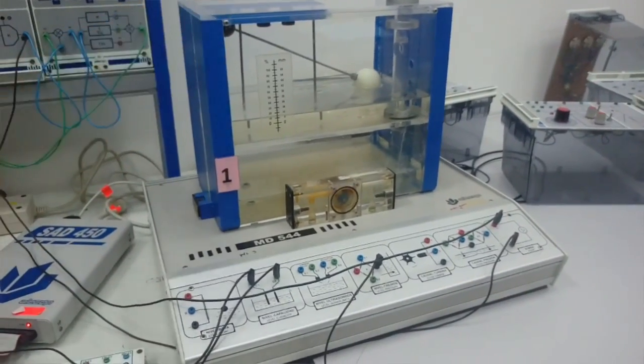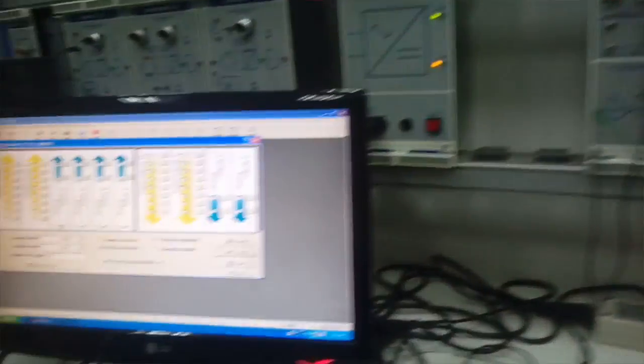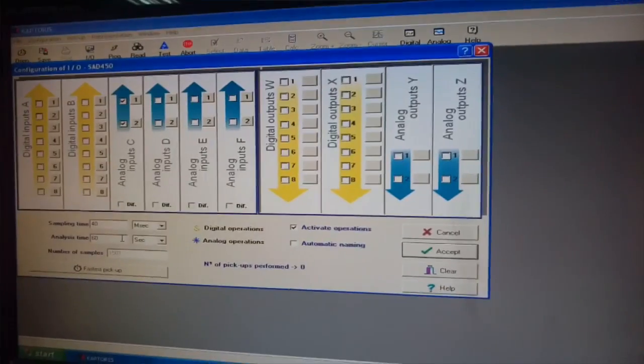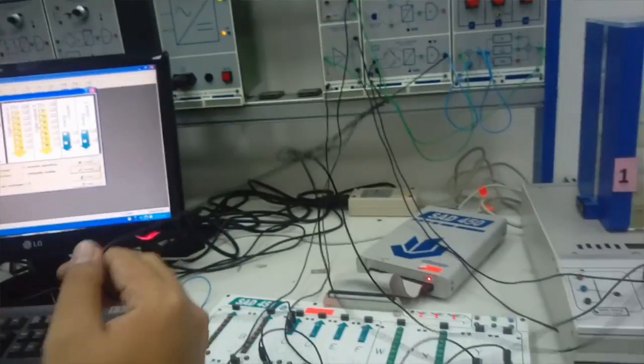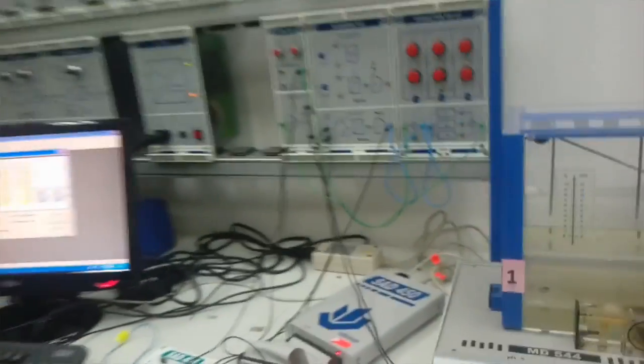This is the water level system. For the input-output, we use analog input C which is channel 1 and 2, which is connected to the circuit and the on-off button.